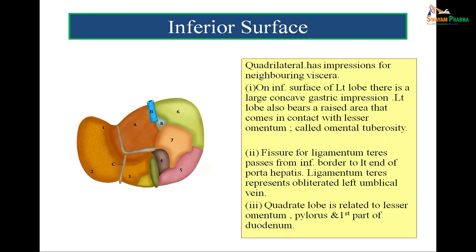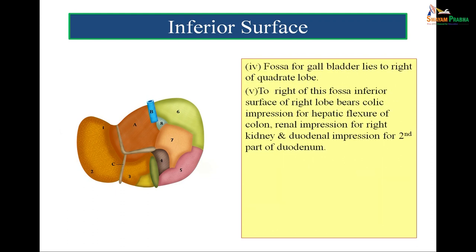The inferior surface is quadrilateral in shape and has impressions for neighboring viscera. On the inferior surface of the left lobe there is a large concave gastric impression. The left lobe also bears a raised area in contact with the lesser omentum, called the omental tuberosity. The fissure for ligamentum teres passes from the inferior border to the left end of porta hepatis. Ligamentum teres represents the obliterated left umbilical vein. The quadrate lobe has visceral relations to the pylorus and the first part of the duodenum. The fossa for gallbladder lies to the right of the quadrate lobe, and the inferior surface of the right lobe bears the colic impression for the hepatic flexure of the colon, the renal impression for the right kidney, and the duodenal impression for the second part of the duodenum.